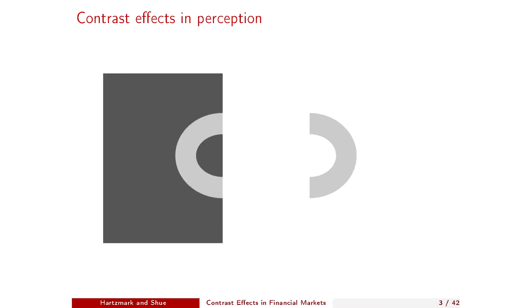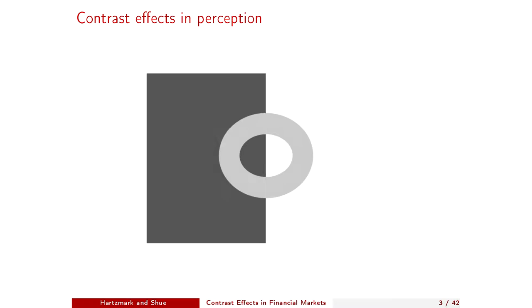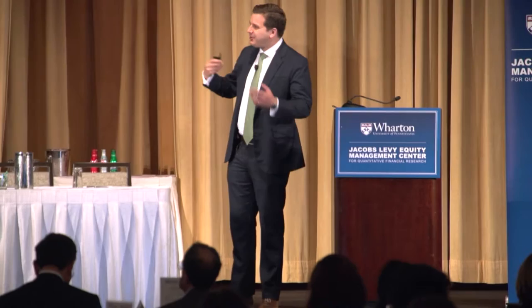We know contrast effects are important in the psych laboratory and in popular culture. They're also how we view the world. Consider two semicircles — the one on the right appears slightly darker than the one on the left, but they are in fact the exact same shade. This is a contrast effect: the circle on the right is against a relatively lighter background, making it appear darker in contrast, while the one on the left is against a darker background, making it appear lighter. Even knowing they're the same shade of gray, your mind still perceives them differently.